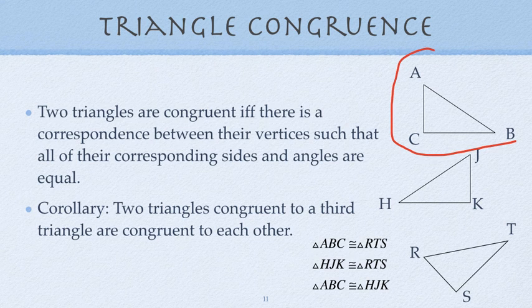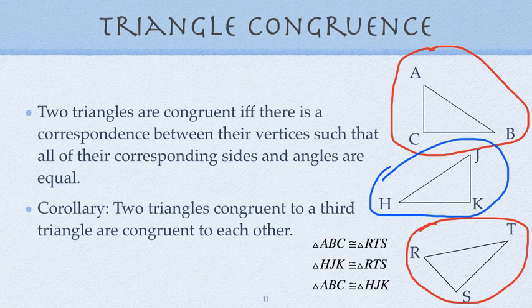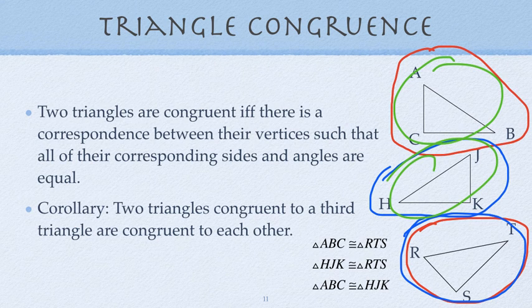For instance, if triangle ABC is congruent to RTS, and HKJ is congruent to RTS, that means that ABC and HJK are also congruent to each other.